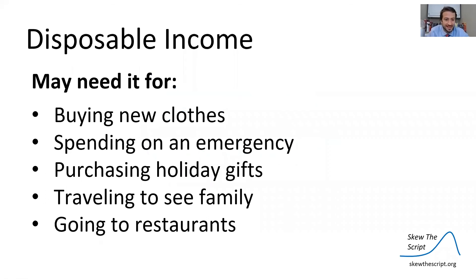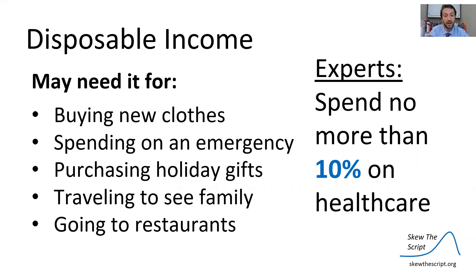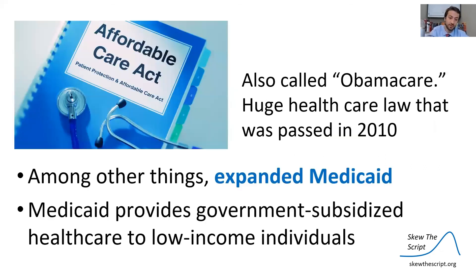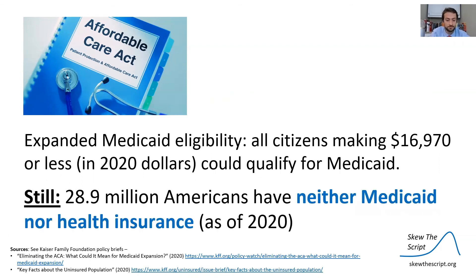Reviewing disposable income — you need it for a variety of things: buying clothes, emergency spending, holiday gifts, traveling to see family, or going out to eat. Experts make the claim that you should spend no more than 10% of your disposable income on healthcare. However, that introduces a problem because for many low-income individuals, healthcare may actually be a huge percentage of disposable income. To counteract this, the Affordable Care Act — also called Obamacare — was a huge healthcare law passed in 2010. Among other things, it expanded Medicaid, providing government-subsidized healthcare to low-income individuals. All citizens making $16,970 or less in 2020 dollars could qualify for Medicaid. Still, nearly 29 million Americans have neither Medicaid nor health insurance as of 2020.